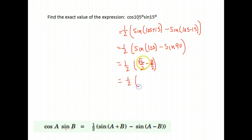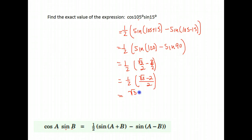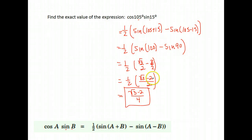The sine of 120 is the square root of 3 over 2 — it's in the second quadrant, but sine is positive there. The sine of 90 is 1, written as 2 over 2 for a common denominator. Subtracting gives us root 3 minus 2 over 2. Then multiplying by one-half: root 3 minus 2 in the numerator, and 2 times 2 gives 4 in the denominator. So the exact value of cosine 105 times sine 15 is (root 3 minus 2) over 4.